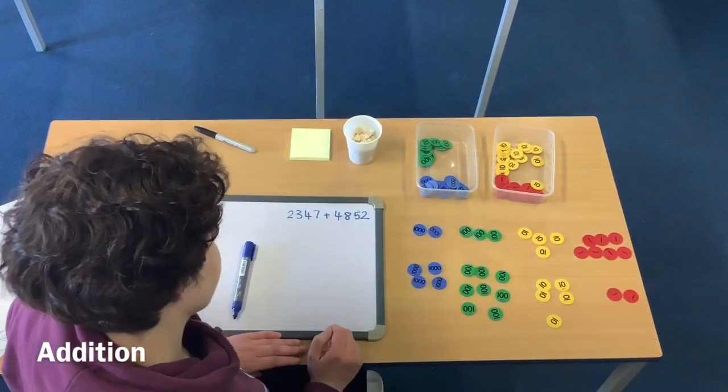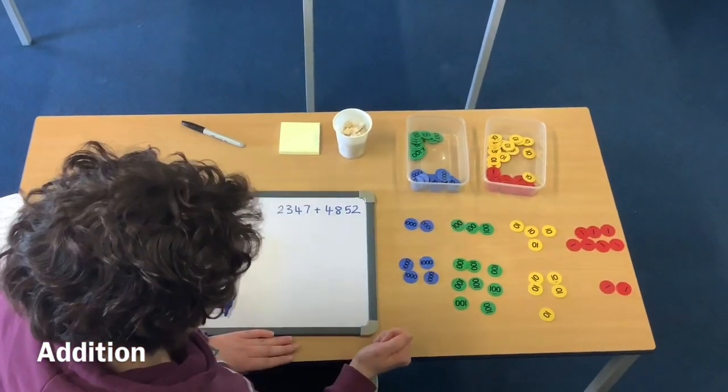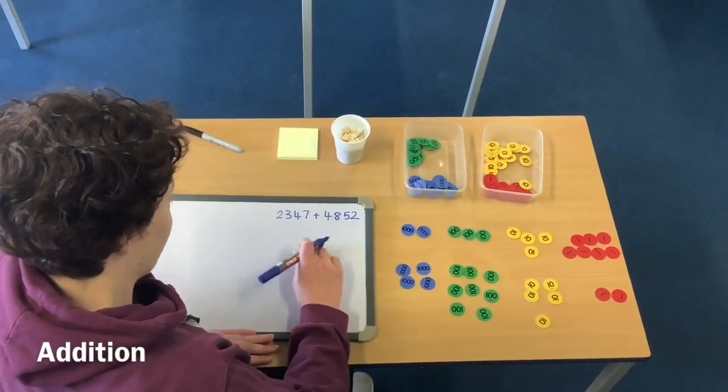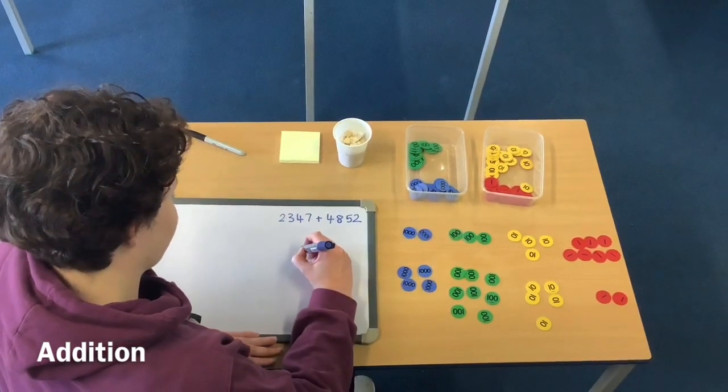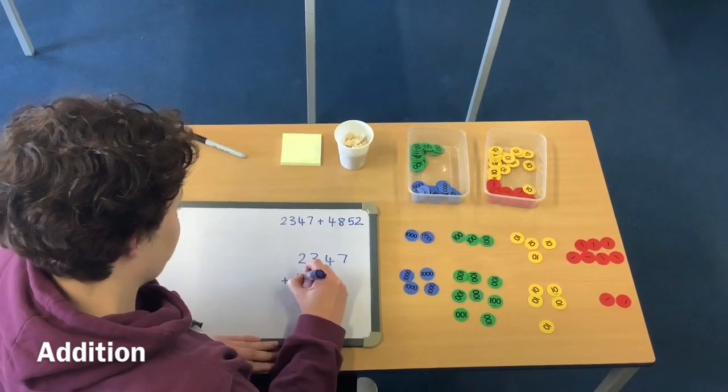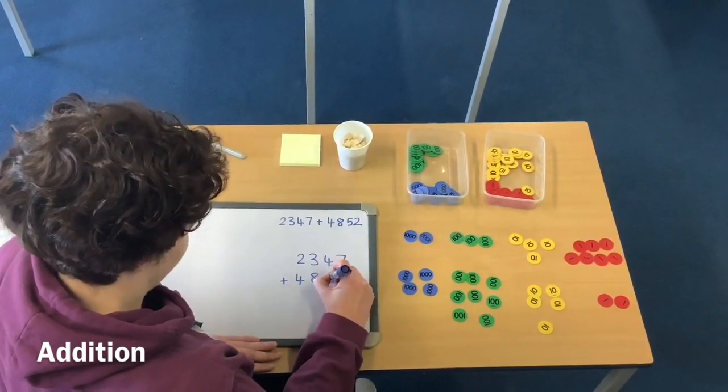So when I start looking to add those together, I'm going to start with my ones. So I'm going to write it out as I've laid out with my place value counters. So 2,347 add 4,852.